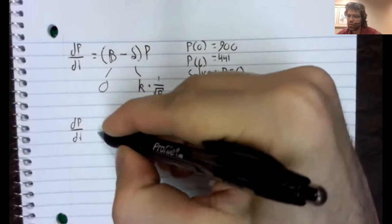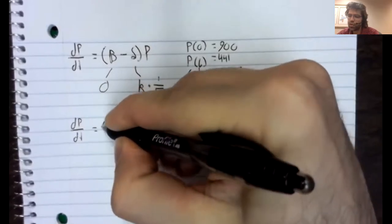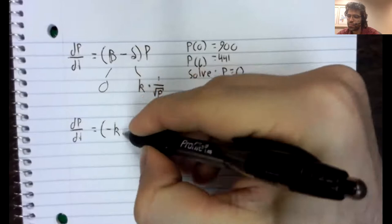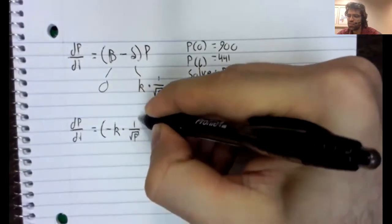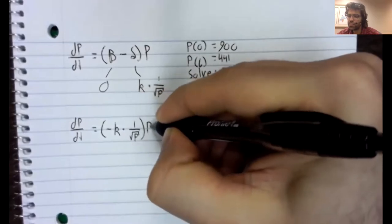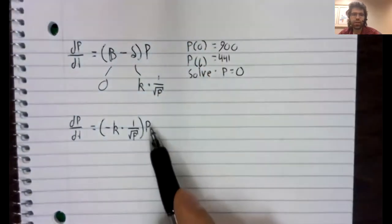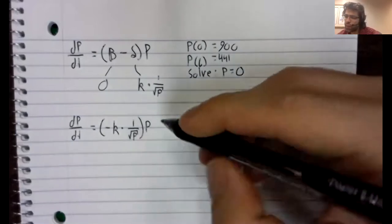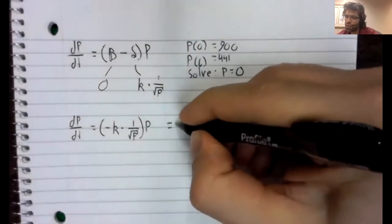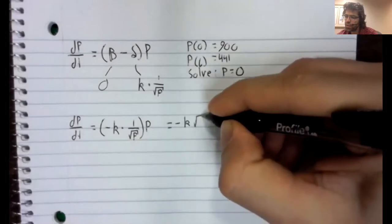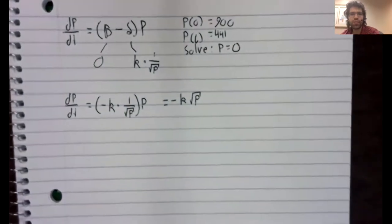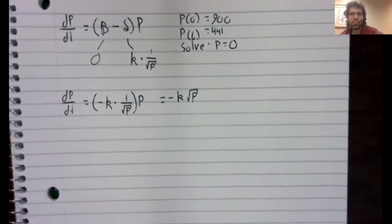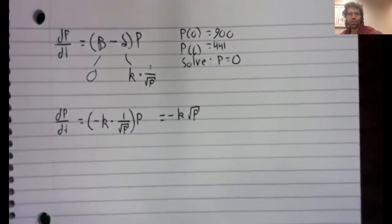So our differential equation becomes this. And P divided by the square root of P is the square root of P. And I already mentioned using separation of variables here.